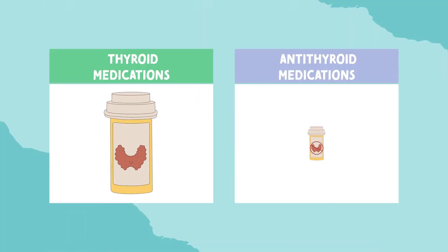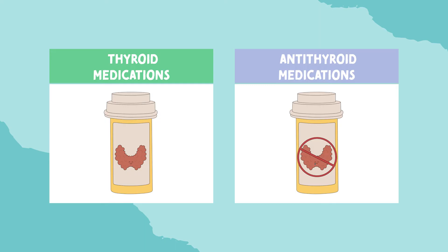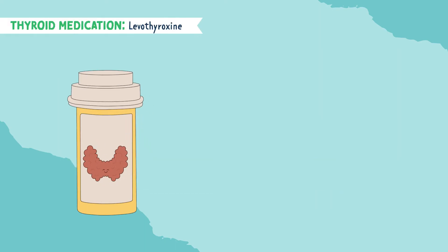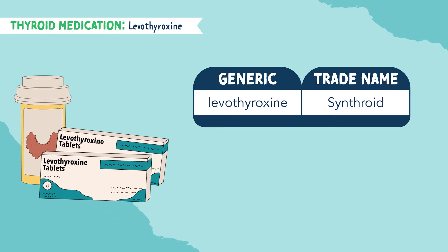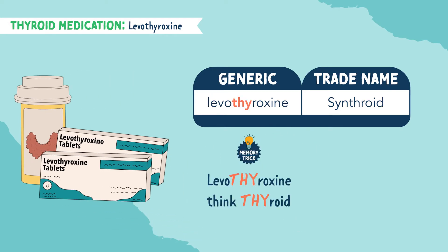Let's talk about levothyroxine. We have thyroid medications and antithyroid medications, but let's focus on thyroid medications, which is levothyroxine. The brand name is Synthroid. This is a synthetic thyroid hormone. You can remember this by the memory trick: levothyroxine looks like 'thyroid,' and Synthroid looks like 'synthetic thyroid.'